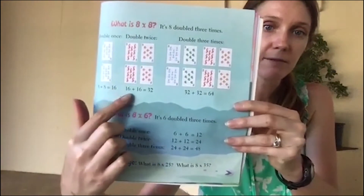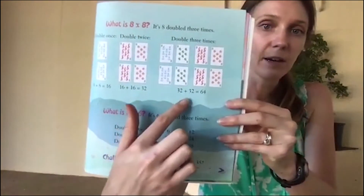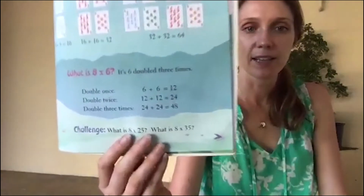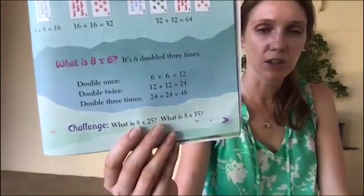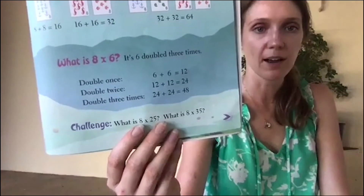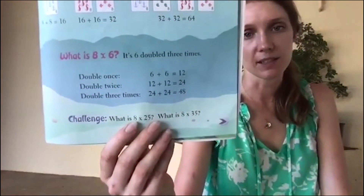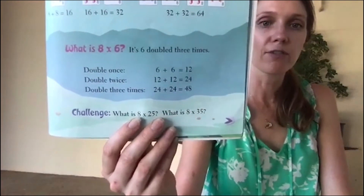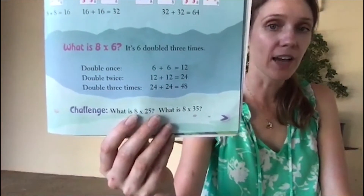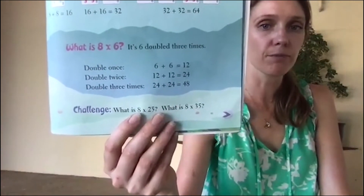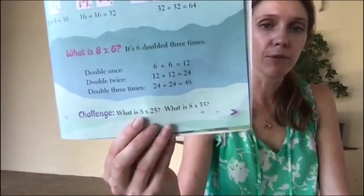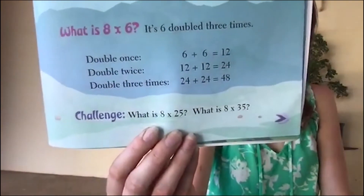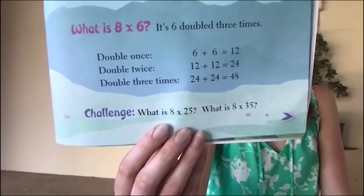What is 8 times 8? It's eight doubled three times: double once — 8 plus 8 is 16, double twice — 32, double the third time — 64. And 8 times 6? Six doubled three times: 6 plus 6 is 12, then 12 plus 12 is 24, then 24 plus 24 equals 48. There are your challenges — give them a try!